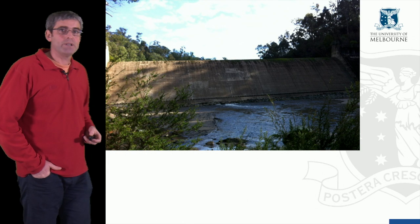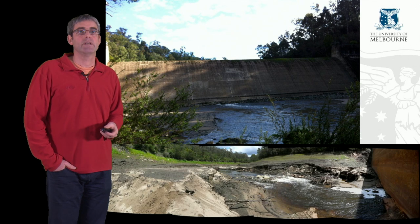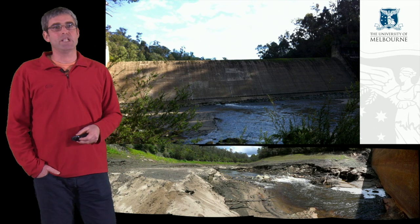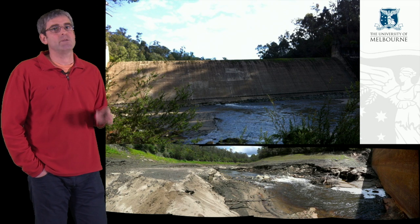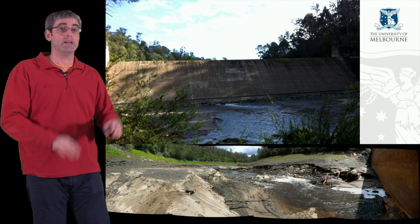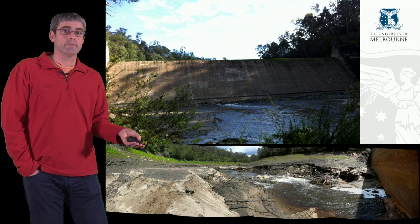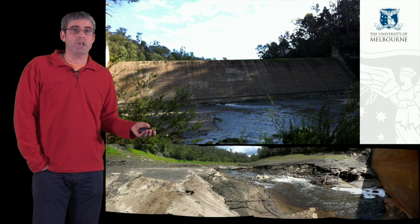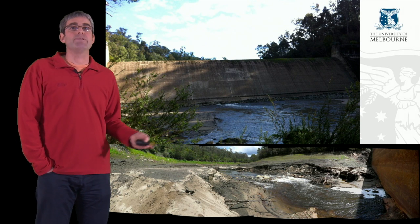Here's an example where a sediment transport equation has been applied. I expect you to go through the details yourself with your readings, and there'll be exercises related to this. This is upstream of a dam - we can see a large amount of sediment has accumulated there. In this case, the dam was going to be removed; it's the Nicholson River in East Gippsland. The consultants were asked to estimate the rate at which sediment stored behind the dam would be eroded and transported downstream. They had to apply a sediment transport equation because the dam hadn't been removed yet. They looked at the type of sediment in the river and the stream slopes to select the most appropriate sediment transport equation for this particular example.